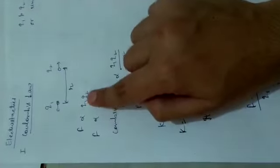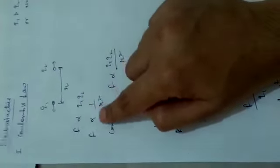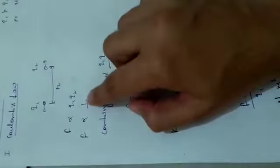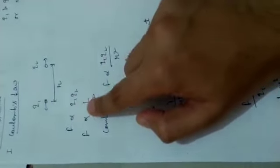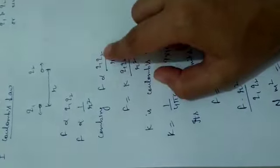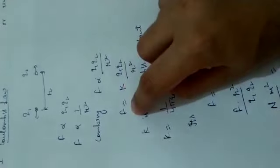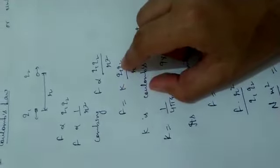Force is directly proportional to product of charges and inversely proportional to square of their distance. While combining, we get the total force. Force is directly proportional to Q1 Q2 by r square. So force equals K Q1 Q2 by r square, where K is constant of proportionality.